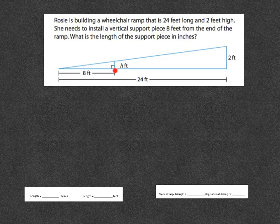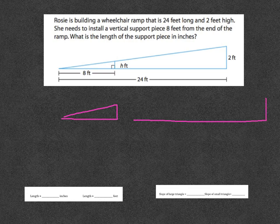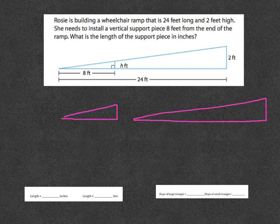The part that I'm missing for my small triangle, it says she needs to install a vertical support piece that's 8 feet from the end of the ramp, and then we're trying to figure out how tall this line would be. I'm going to take and draw these two triangles separately, so that I can focus on them as individuals.